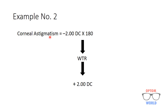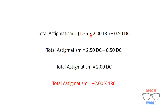Let's see another example. Here we have corneal astigmatism of minus 2 diopter cylinder at 180. A minus cylinder at 180 indicates that it is with-the-rule astigmatism, so we use a positive sign with the cylinder in the formula. Putting the values in: 1.25 multiplied by 2, minus 0.50. Multiplying gives 2.50, minus 0.50, so the total astigmatism is plus 2 diopter cylinder, and since it was with-the-rule astigmatism we write minus 2 at 180. So this was Javal's rule.